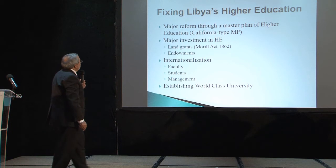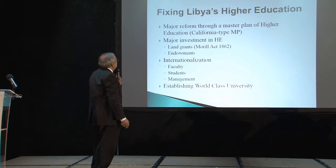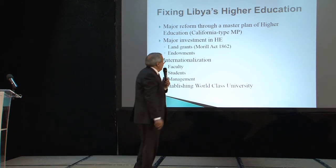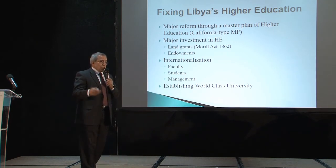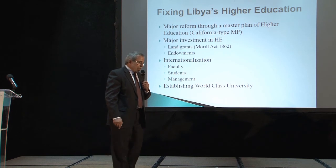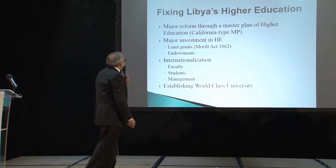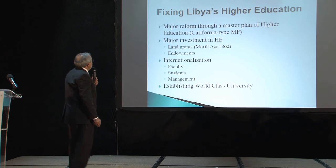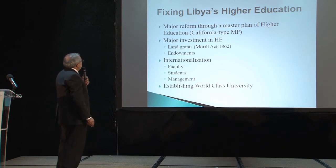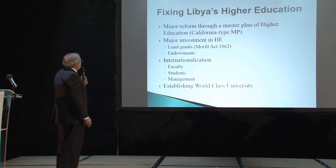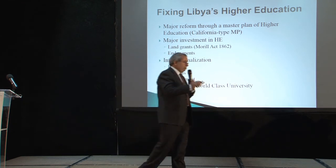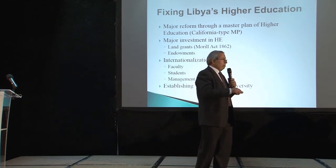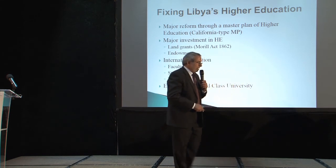This needs serious reform through a master plan — one example is the California master plan. In the 1940s and 50s, California's higher education was also chaotic, but they fixed it and now it's one of the best higher education systems in the world. We need to pool our resources for research universities — only a few universities rather than scattering resources all over the place.